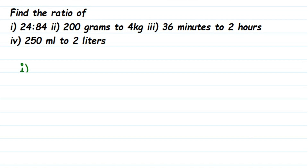We have to find the lowest form, also called the reduced form or simplest form. So 24:84 is not in the lowest form. We have to cancel and bring it to the smallest form. All ratios can also be written in fractional form, so this will be equal to 24 by 84.